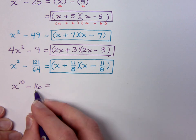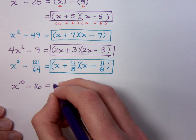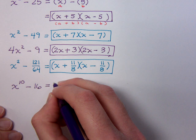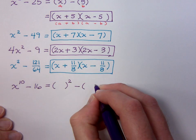x^10 - 16. Well, 16 is obviously a square, but x^10? That guy seems kind of weird. But he is a square. Let's do this. Can you see this as something squared minus something else squared?